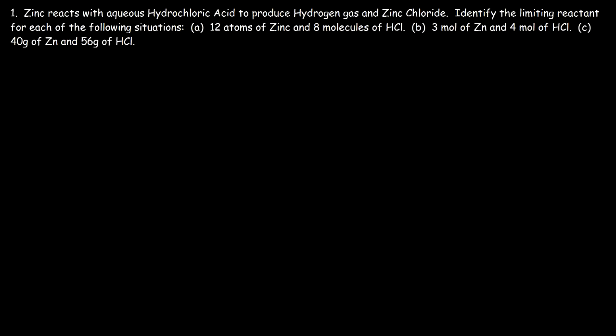In this video, we're going to focus on limiting reactants and how to identify them, and also how to solve stoichiometry problems that involve limiting reactants. So let's go ahead and begin. Number one: zinc reacts with aqueous hydrochloric acid to produce hydrogen gas and zinc chloride. Identify the limiting reactant for each of the following situations.